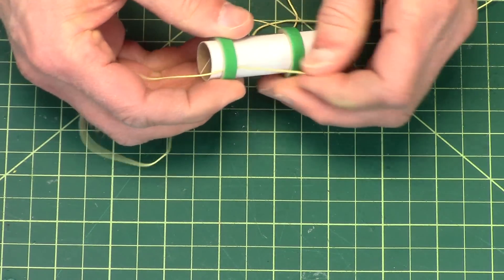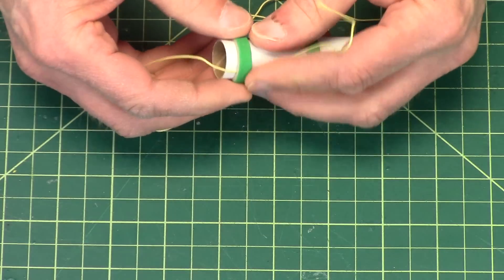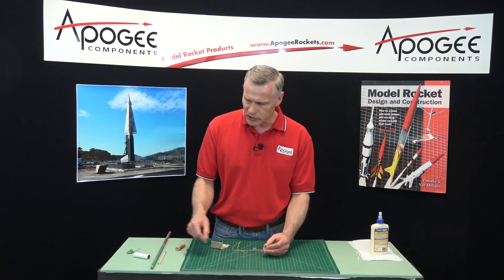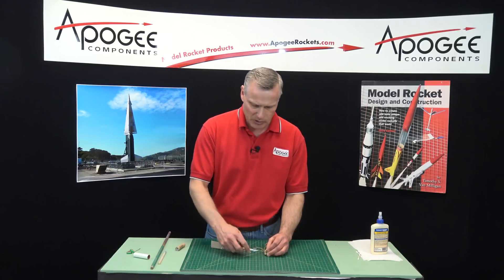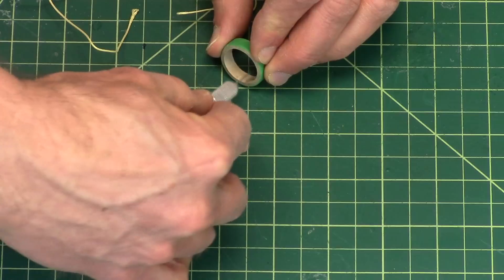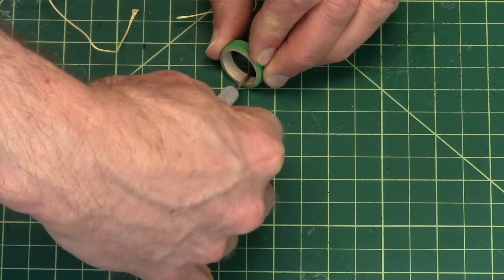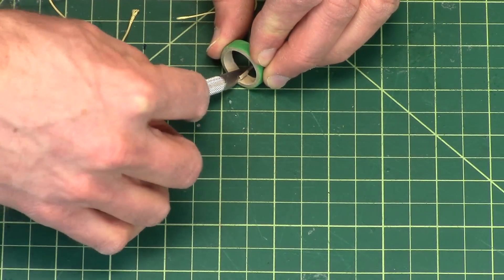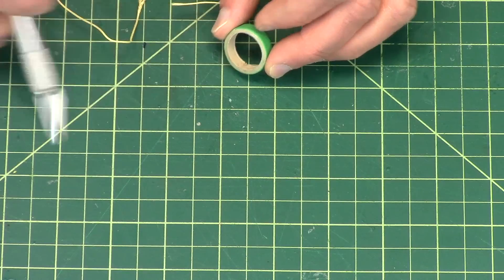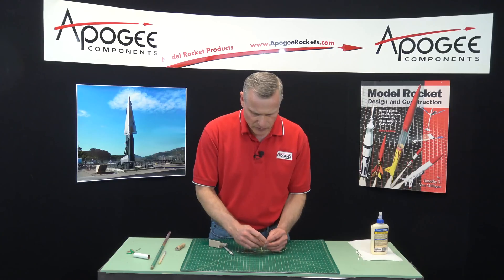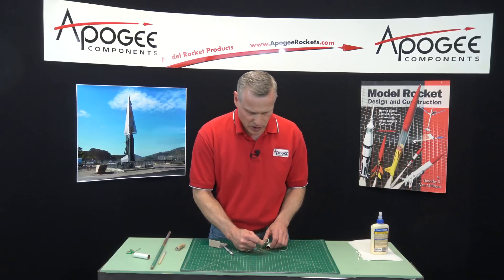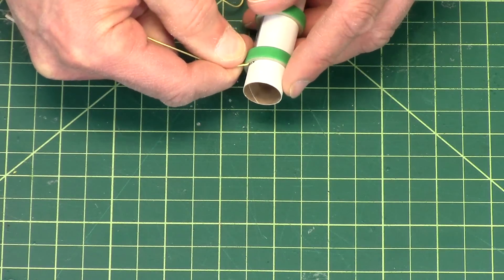So what I do is I'll put it underneath the ring like that. And if you're having trouble getting the ring over the top of the shock cord, take your hobby knife and just cut a V-notch in the ring like this. You don't want to go all the way through. You just want it to have a little notch where the shock cord can lay in. And that makes it a little bit easier to slide it over the tube like that.